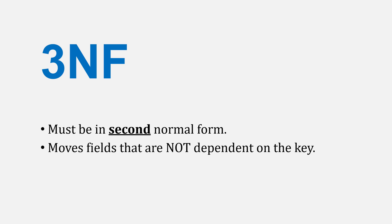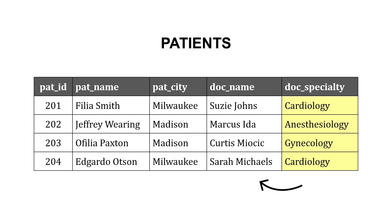To achieve third normal form — the most common level we get to — we must be in second normal form, and we need to move fields that are not dependent on the key. Going back to that patient table: we've got the ID, the name, the city of the patient, but also the name of their doctor and the specialty for that doctor. The specialty of the doctor does not depend on the patient ID, which is the key — it actually depends on the name of the doctor. This becomes an issue because if a doctor changes their specialty, we'd have to change that specialty field for every patient who has that doctor, which causes complexity.